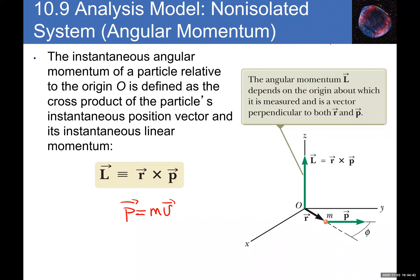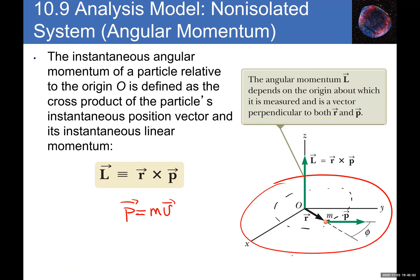Think of it like this: if you have a particle that is either moving on its own or maybe part of a disc that is rotating, then this particle is tracing a circle. At any instant it has a velocity tangent to the path, and since it has a mass, it also has a momentum p = mv. With respect to the axis of rotation, this particle has a distance r from the axis.